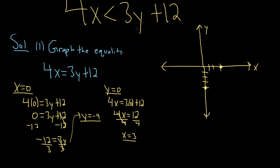Because this is a strict inequality, we're going to use a dotted line. If the inequality has an equal sign — like ≤ or ≥ — it's a solid line. If it's a strict inequality — like < or > — it's dotted.